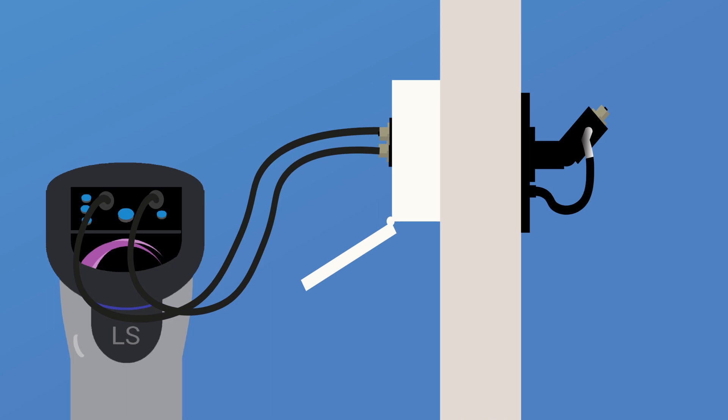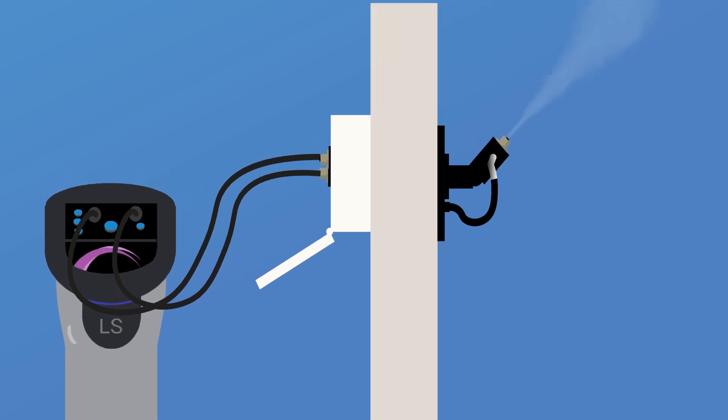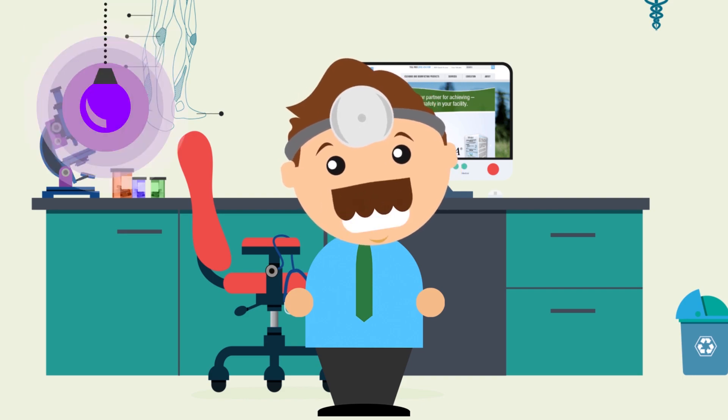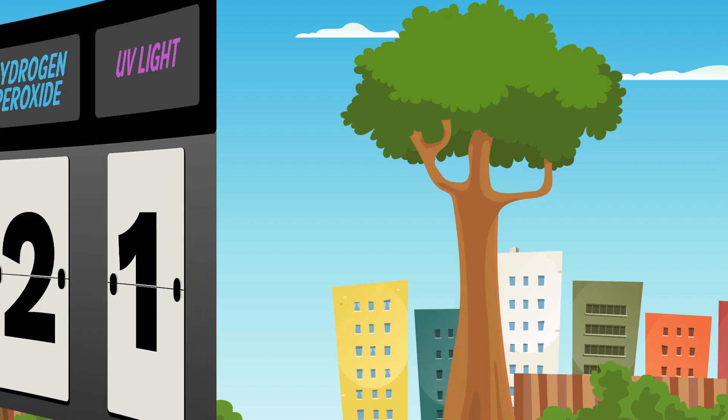While built-in fogging portals like the halo portal are making fogging multiple rooms in succession easier, there's never going to be anything quite as easy as turning on the light. This point goes to UV.